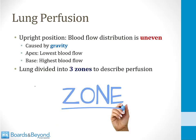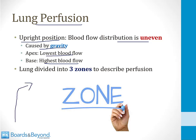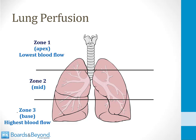Now switching from ventilation to perfusion: when we're upright, blood flow distribution to the lungs is uneven due to gravity. The apex — the top of the lungs — has the least blood flow, while the base has the highest. It takes more energy to pump blood to the apex, so there's less flow there. The lungs are classically divided into three zones: zone three at the base with the highest blood flow, zone one at the apex with the lowest, and zone two in the middle.